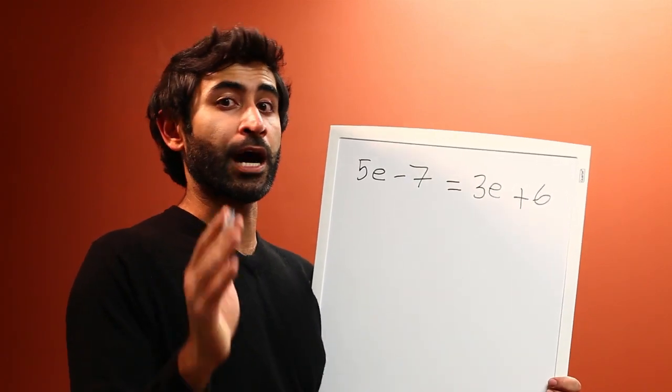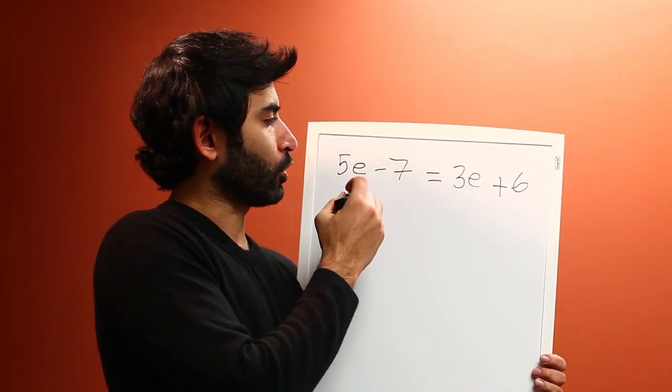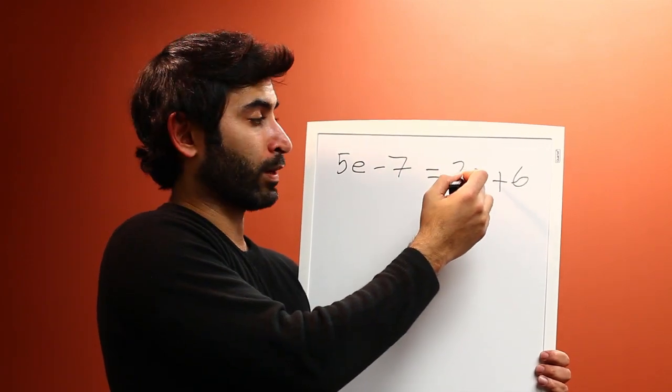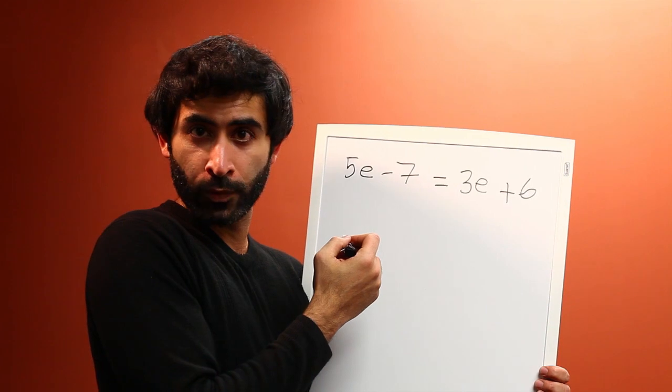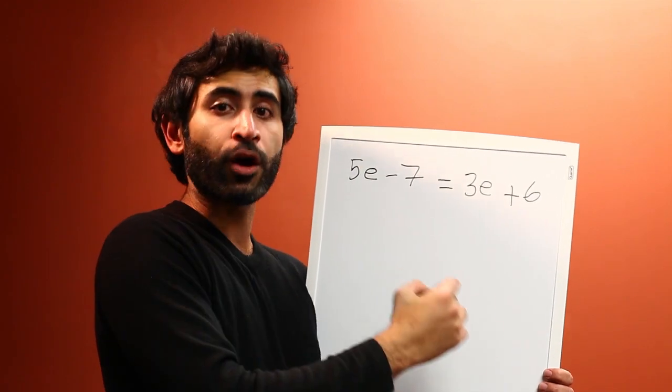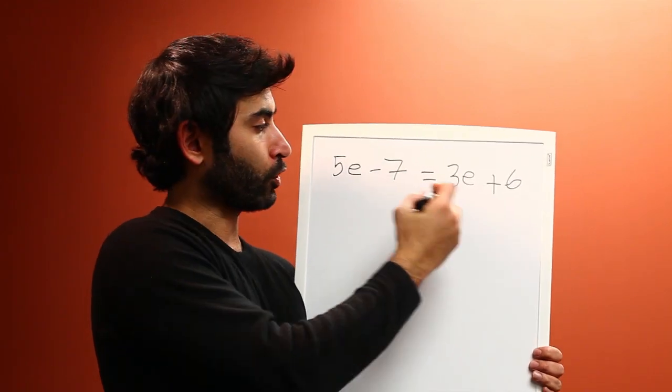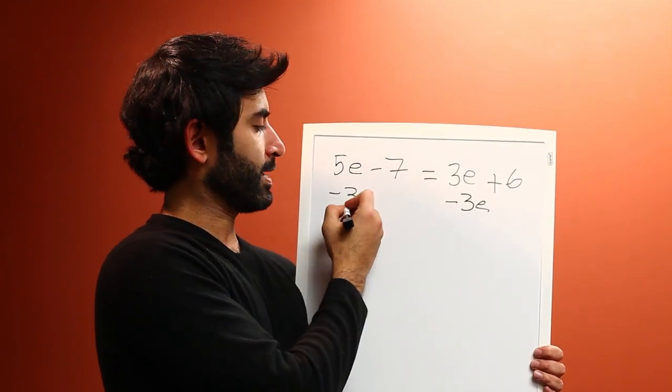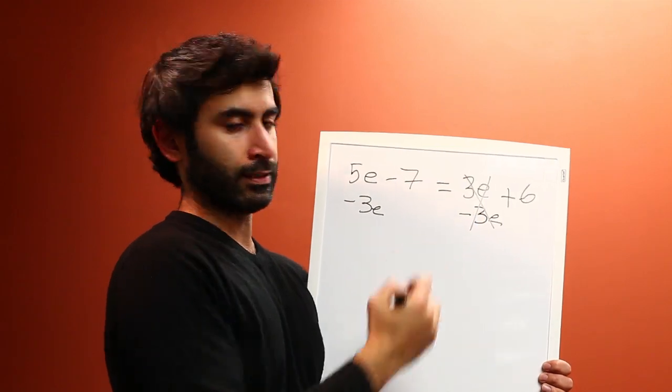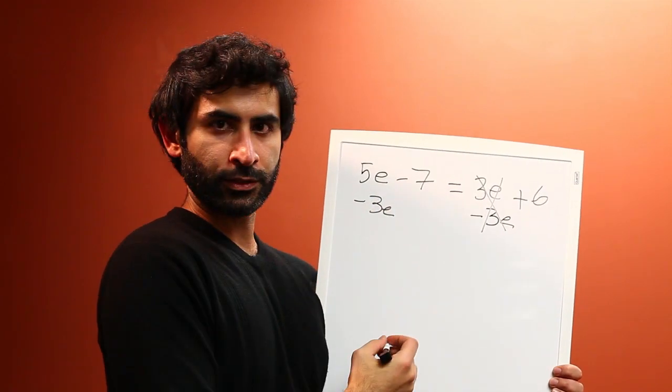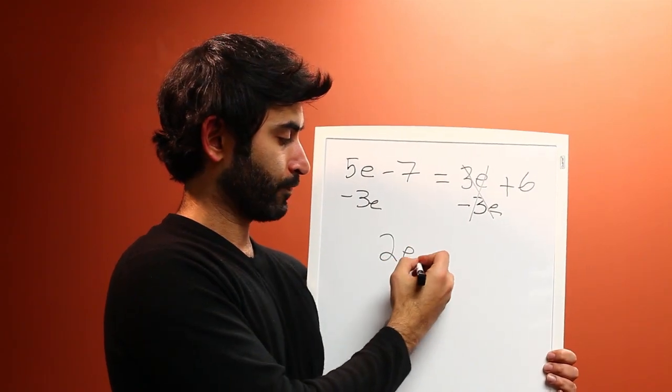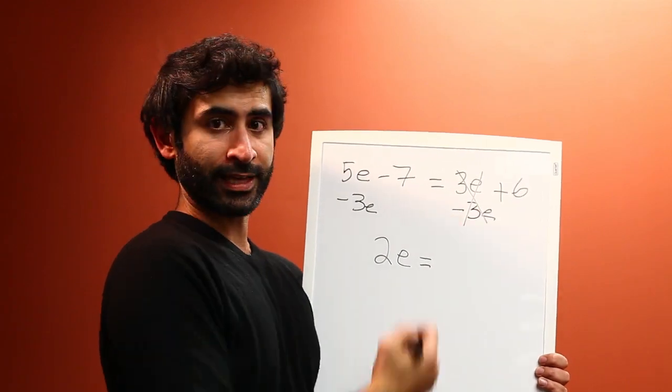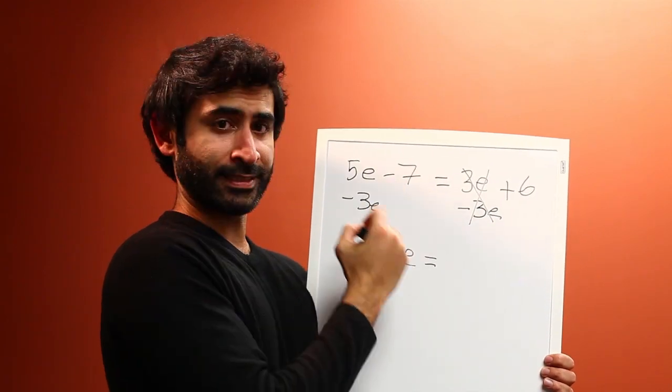Let's solve it, let's see how easy this is. So 3E's on this side - we want to take all the E's to one side and we want to take all the numbers to the other side. So if you do minus 3E here, minus 3E here, 3E minus 3E is 0, 5E minus 3E is 2E, and here you have 6. Minus 7 here,